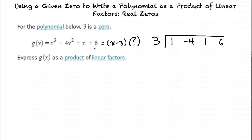In other words, the first 1 is the coefficient of x cubed, the negative 4 is the coefficient of x squared, the 1 is the coefficient of x, and the 6 is a constant.